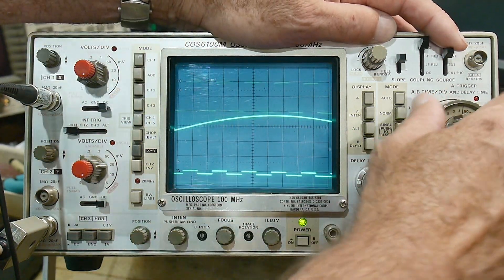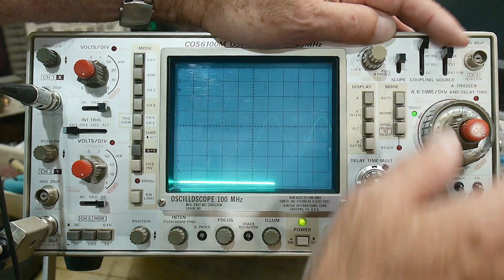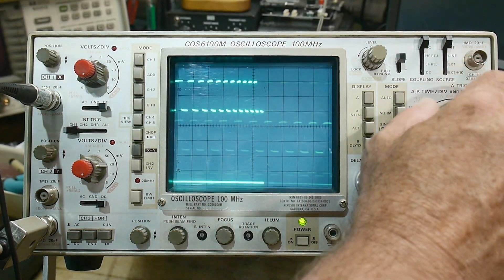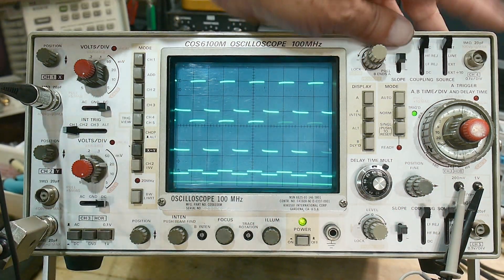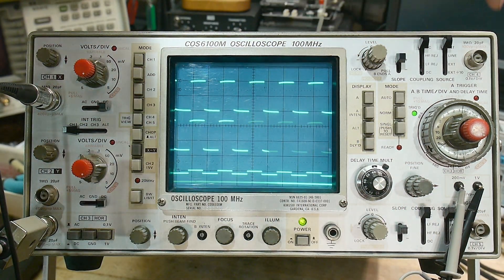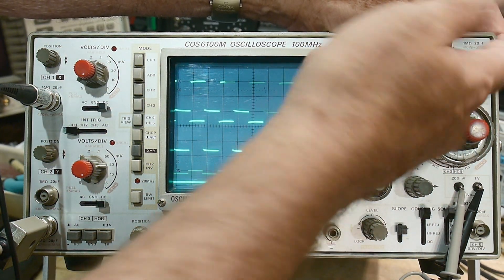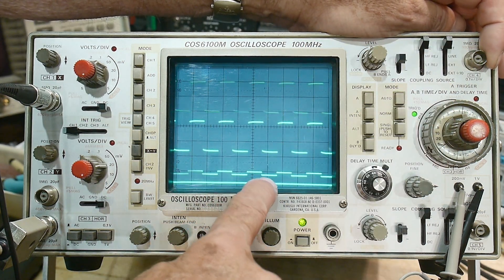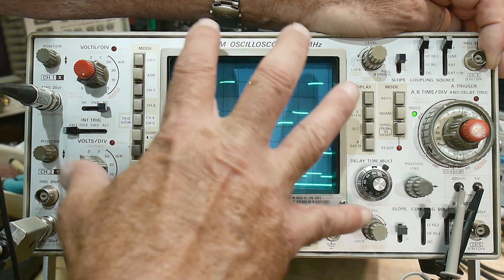If I set it to line, then what's being sent to the trigger is the 60 hertz line signal. And if I use this BNC over here, this is external channel four input, so now I can input a separate channel into channel four, which will be my trigger, and I can see it at the same time. So now I've got a four channel scope.